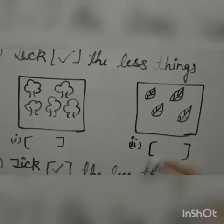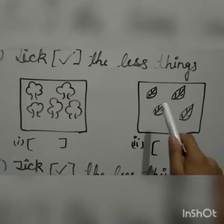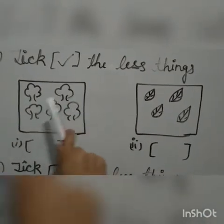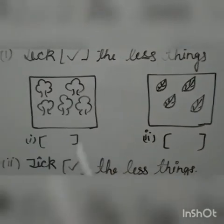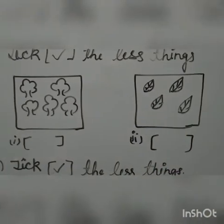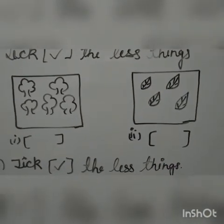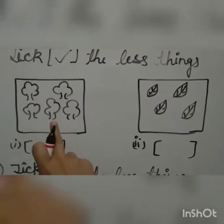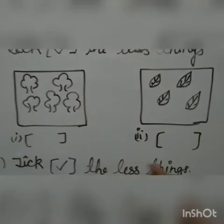The second box has less things because there are 1, 2, 3, 4 leaves and there are 1, 2, 3, 4, 5 trees. 5 trees are more and 4 leaves are less because there is 1 leaf less as compared to this box. So you have to tick here.